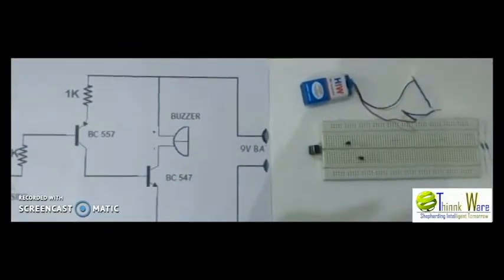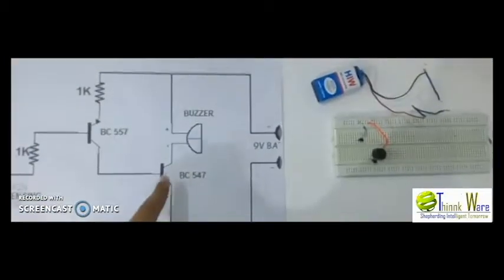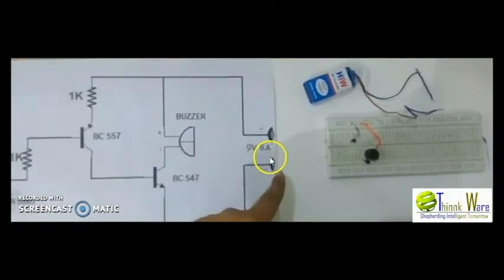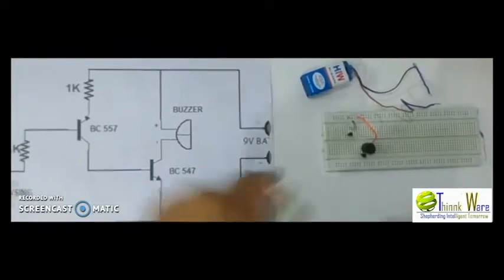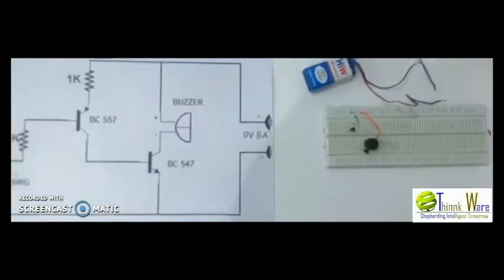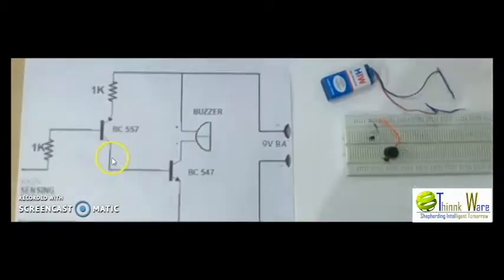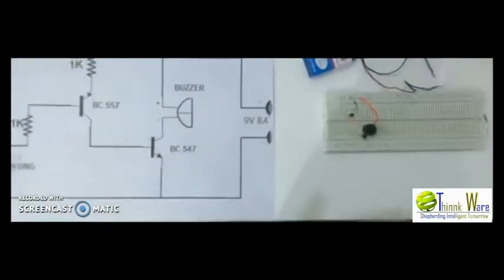Now after making those connections, we see the emitter of BC547 is connected to the negative terminal of the battery. After that, the collector of BC557 is connected to the base of BC547.